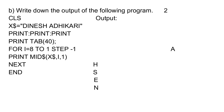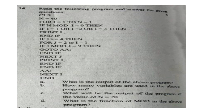B. Write down the output of the following program. X$ = "Dinesh Adhikari". There are 3 print statements meaning 3 line breaks. Then print tab 40 means 39 spaces, then 'A' which is in the 8th position according to the program. Study the program carefully — for I = 8 to 1 step -1: print Mid$(X$, I, 1): Next. Understand the process carefully.